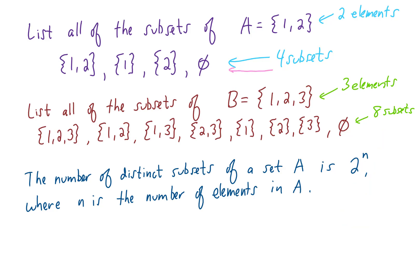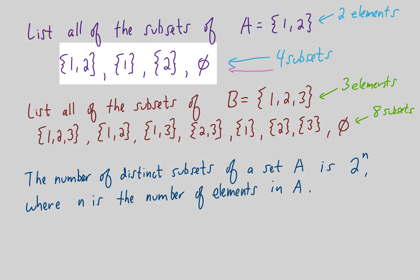Not to get too detailed, but we could also ask the question, how many proper subsets does A and B have? Well, the only difference between a subset and a proper subset is that a proper subset can't equal the original set. So if we look at our list of subsets of A, the only one that isn't a proper subset is this one right here. So A has three proper subsets.